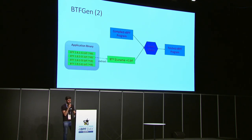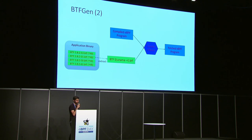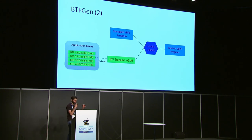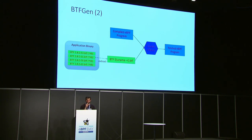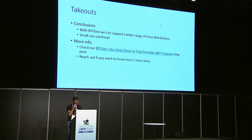The overall approach remains the same. The difference is that the BTF information is neither fetched from the internet nor provided by the operating system — instead, we ship BTF information for many different kernels together with our application. According to the running Linux distribution and kernel version, we select the right BTF file and provide it to our loader library.